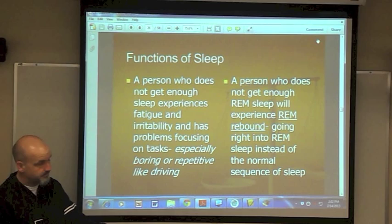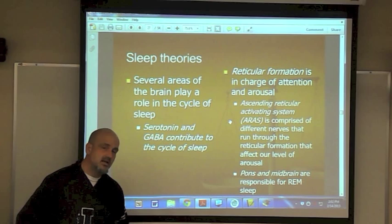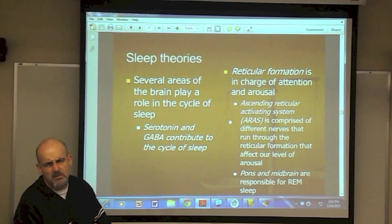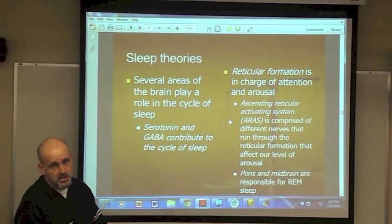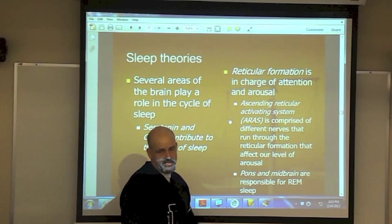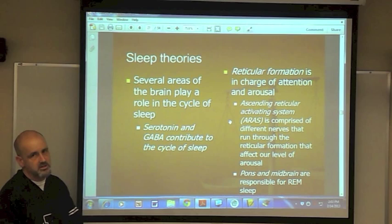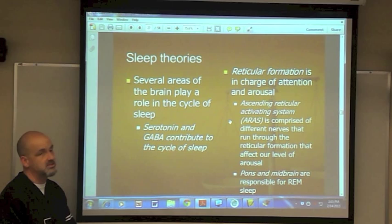Sleep theory: several areas play a role in sleep cycles. The neurotransmitter serotonin — a stabilizer — plays a big role, as does GABA, which inhibits and slows down brain activity. The brain area involved is the reticular formation. Specifically, what runs through it is the ascending reticular activating system (ARAS), comprised of several nerves — bundles of axons that affect our level of arousal. The pons and midbrain are responsible for REM sleep, which is why they're associated with dreaming.